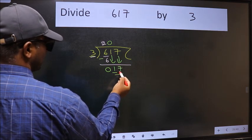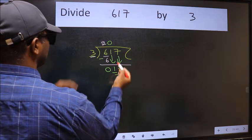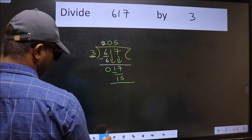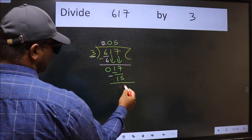Now 17. A number close to 17 in the 3 table is 3 times 5, 15. Now we should subtract. We get 2.